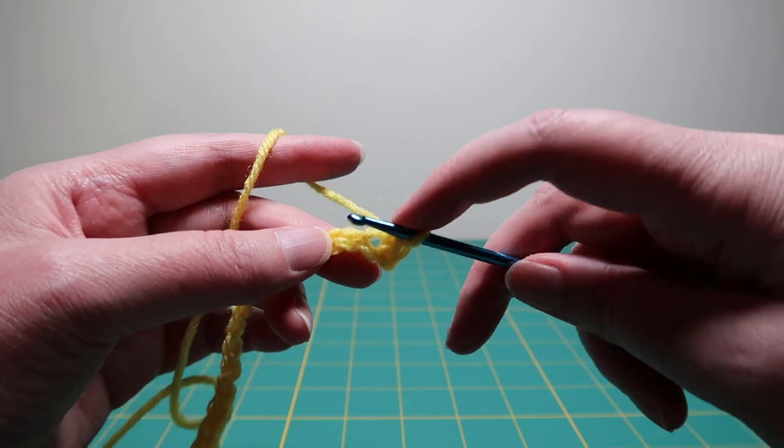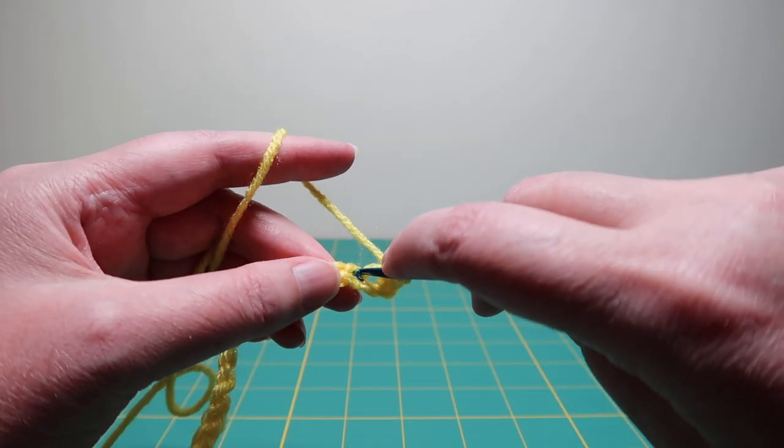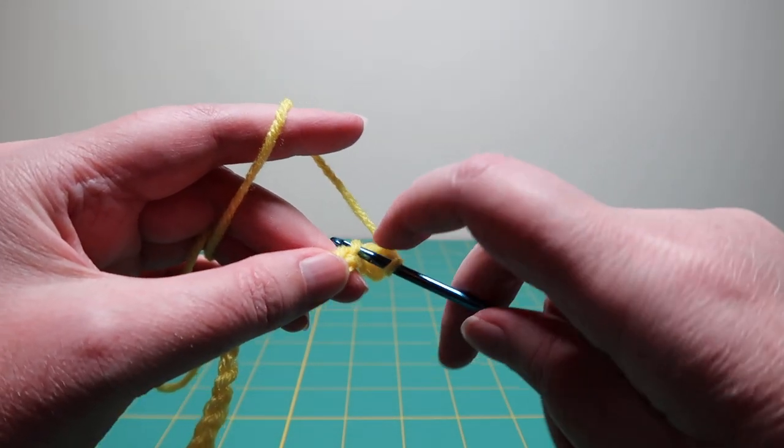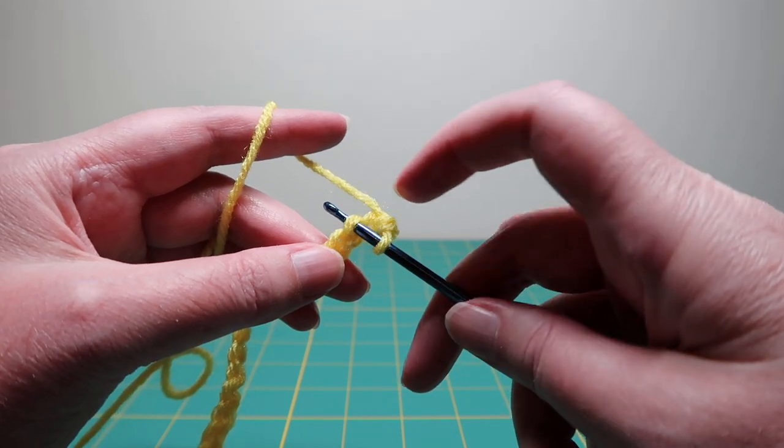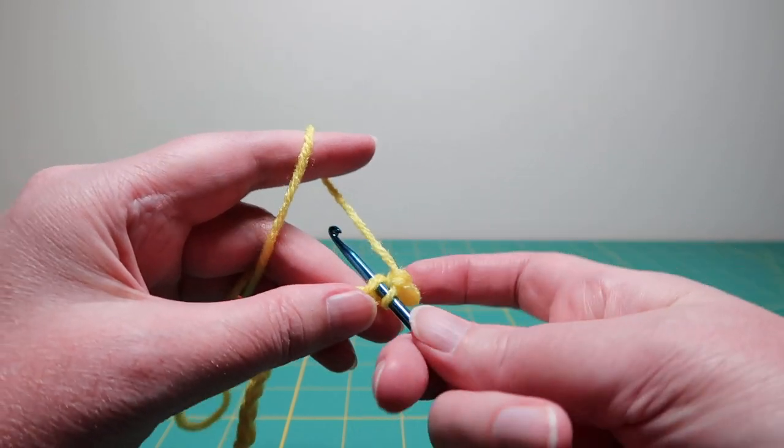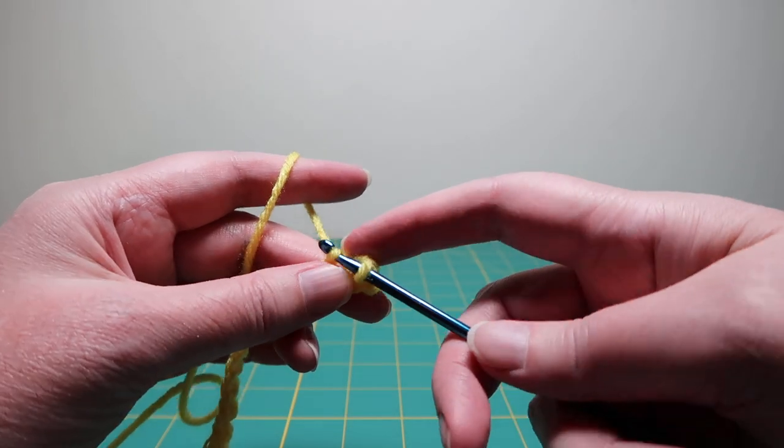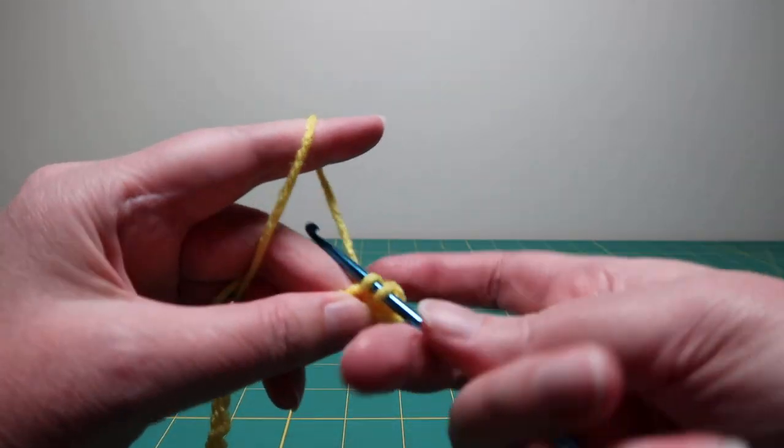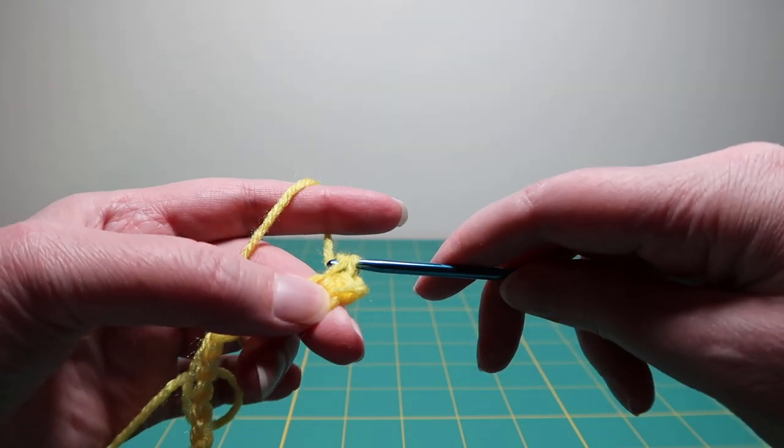So you stick your hook in, catching just the strand on top, yarn over, pull through, yarn over, pull through both loops.